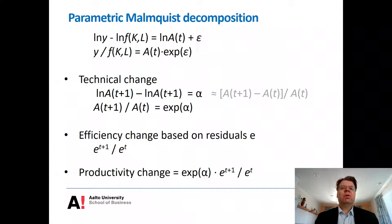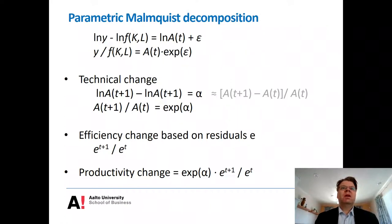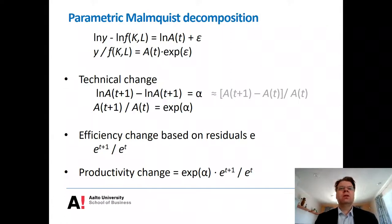A couple of points are worth noting. This is a simplified presentation — I have excluded the scale efficiency component. To make it conform to the usual Malmquist index or index number measures of productivity, we should ensure the production function F exhibits constant returns to scale. We can think of the ratio of observed output to the production function — which represents potential output — as the level of productivity. Changes in this ratio measure productivity change. Constant returns to scale can be imposed in the estimation.